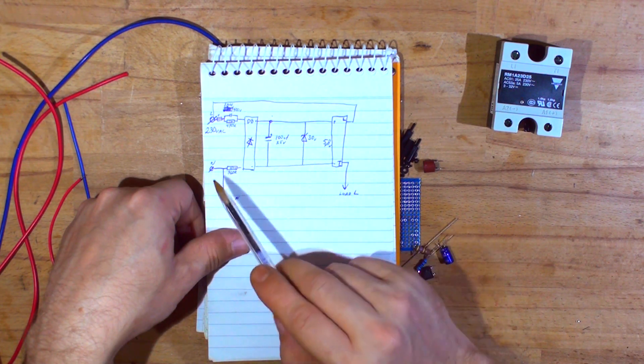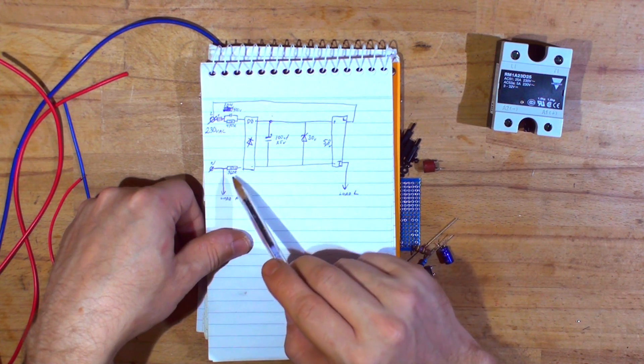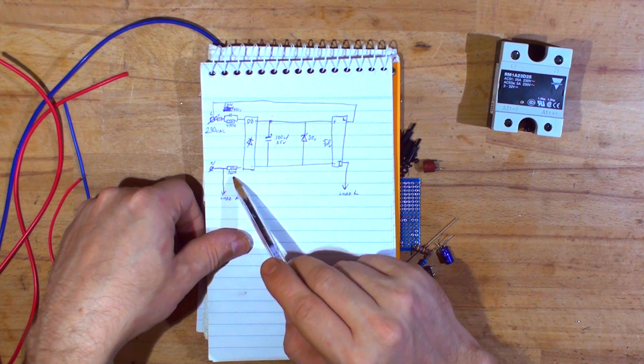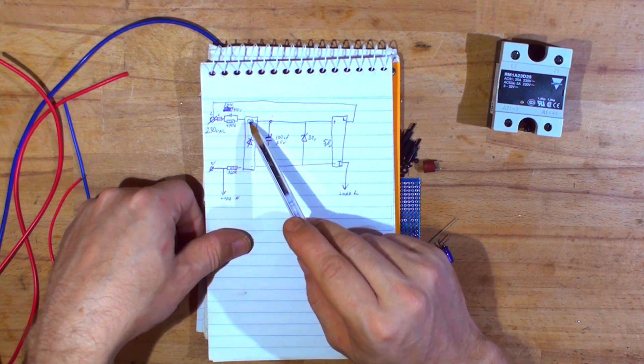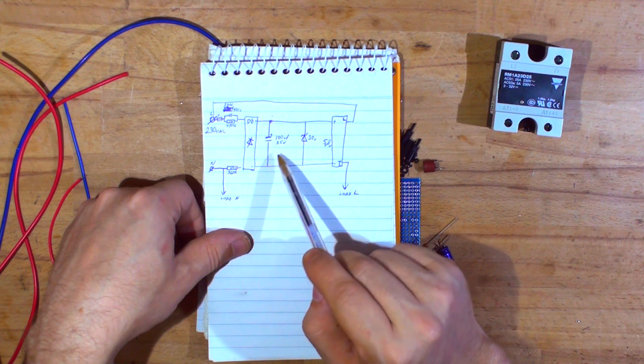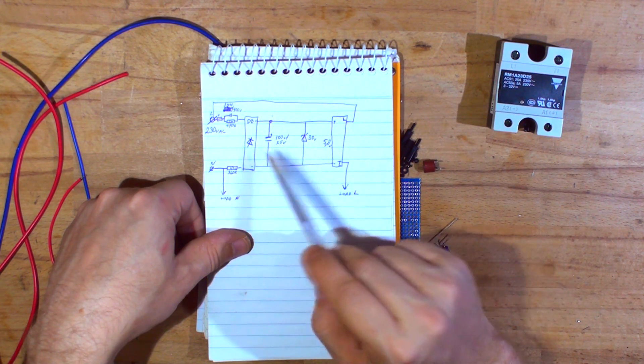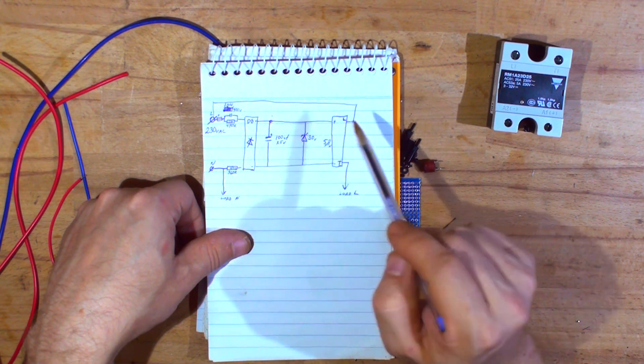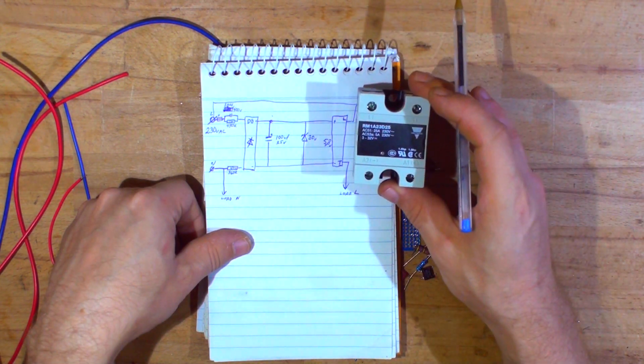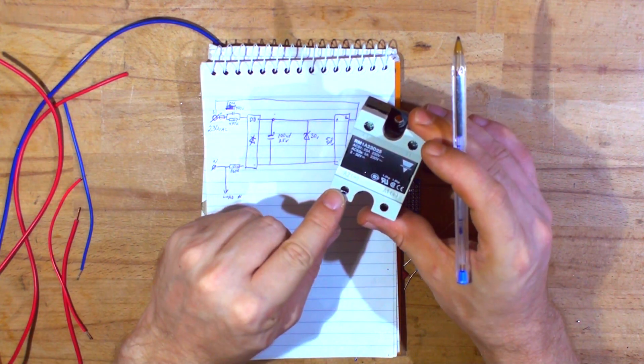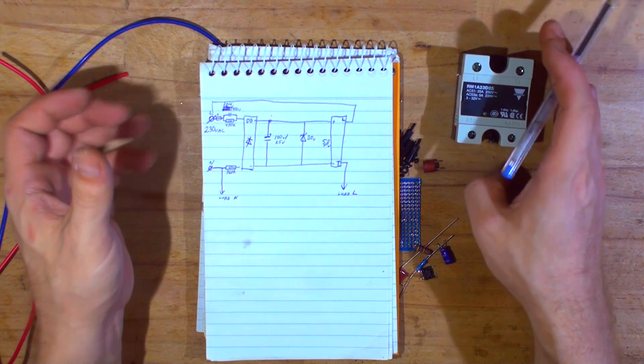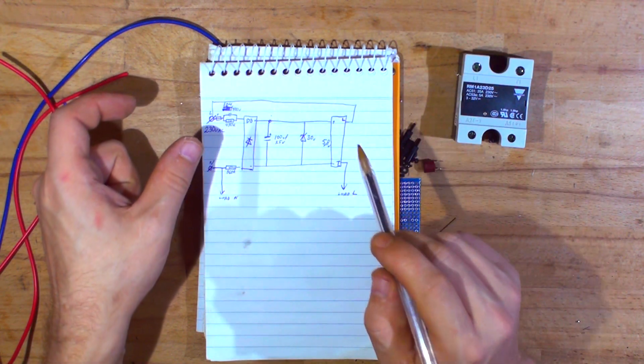On the neutral we'll have one line going to load, and then we have a half watt 360 ohm resistor. We've got the bridge rectifier, 100 microfarad 25 volts capacitor after the bridge rectifier, 30 volts diode, and that's going to be generating 5.8 volts. That's going to go into the input of the A1 and A2 solid state relay and that should turn it on.